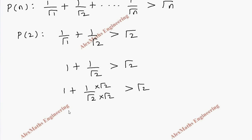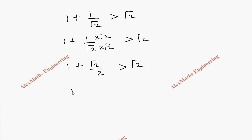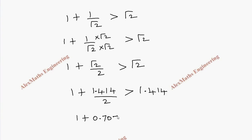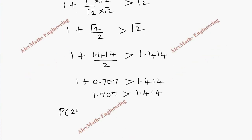We multiply numerator and denominator by √2, rationalizing the denominator, giving 1 + √2/2 > √2. Since √2 ≈ 1.414, this becomes 1 + 1.414/2 = 1 + 0.707 > 1.414, which is true. So P(2) is true.